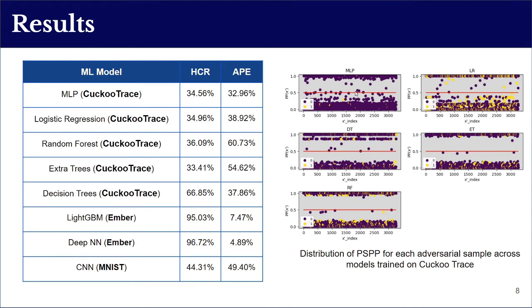Moving to the results, the table shows results for the two metrics — the high correlation rate and the average perturbation error — for each model trained on different datasets. The high correlation rate results suggest that for most studied models, more than half of adversarial samples are produced using feature perturbations that have a weak correlation with the evasion result. These findings propose that although a perturbed sample can confuse a machine learning model to misclassify its true label, the correlation between each single feature perturbation and the misclassification is not always guaranteed.